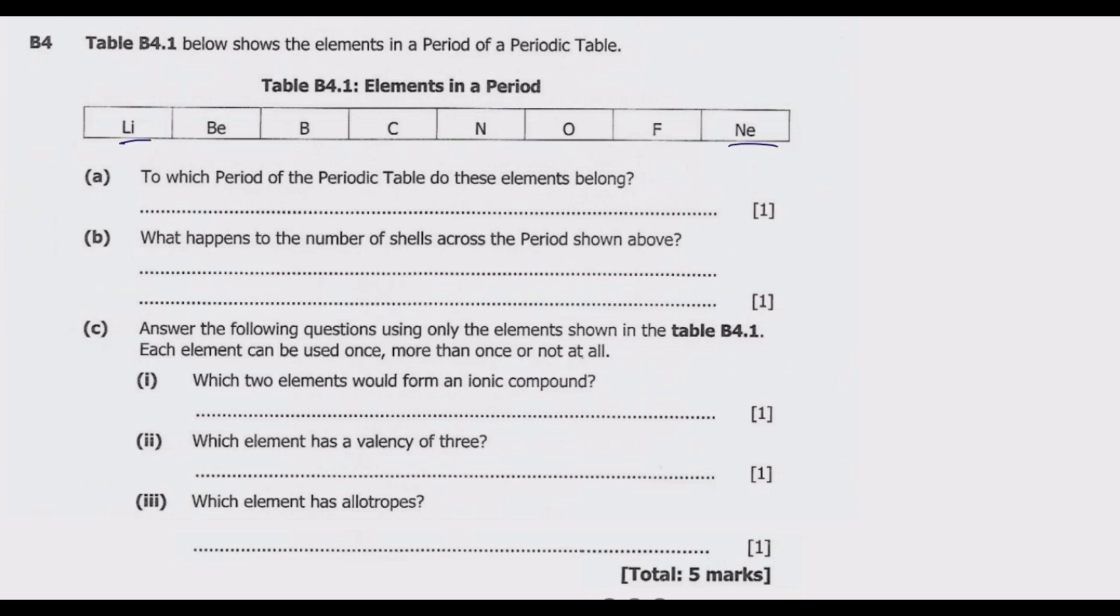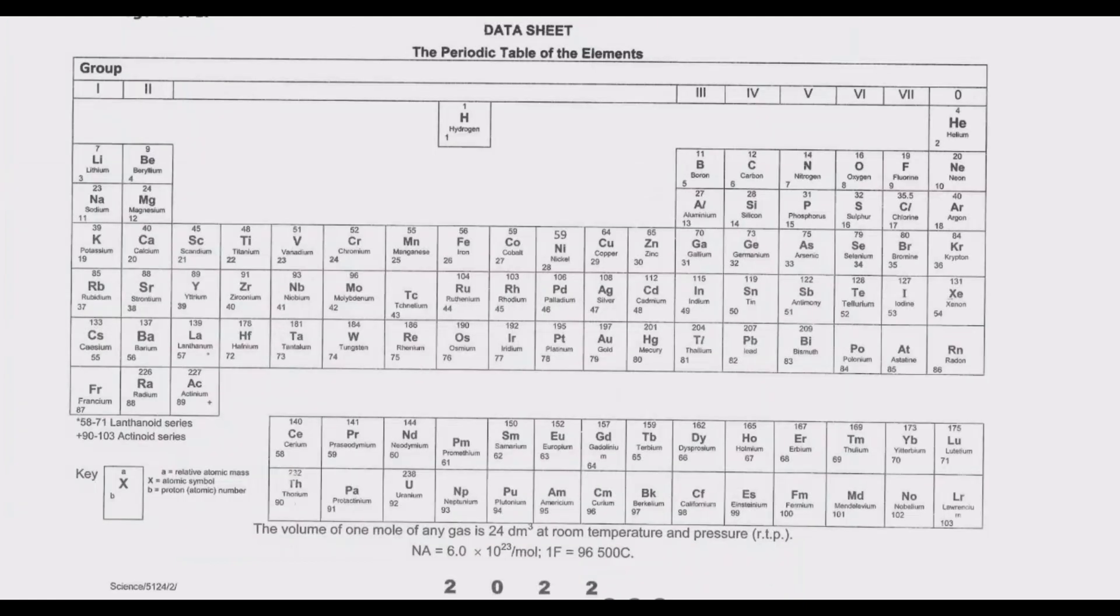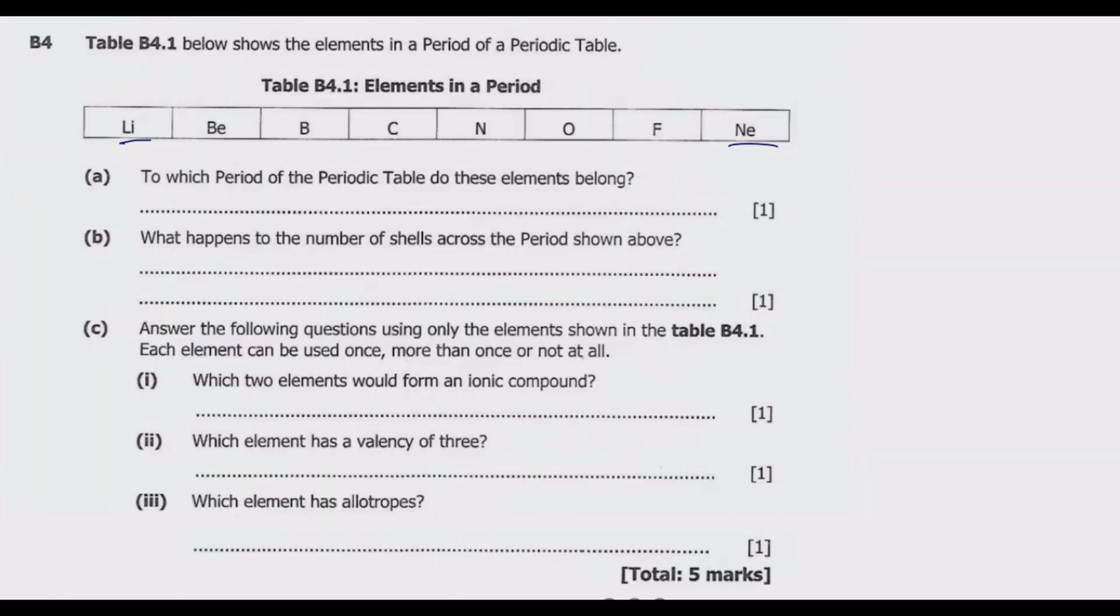To which period of the periodic table do these elements belong? What you need to do is just go to the back of the question paper and check where these elements are coming from. If you go to the periodic table, you will notice that this is lithium, then beryllium, then we end up with neon. This is the first period, this is the second period, third, fourth, all the way up to the last one. You notice that this is in the second period. So this is in period 2.